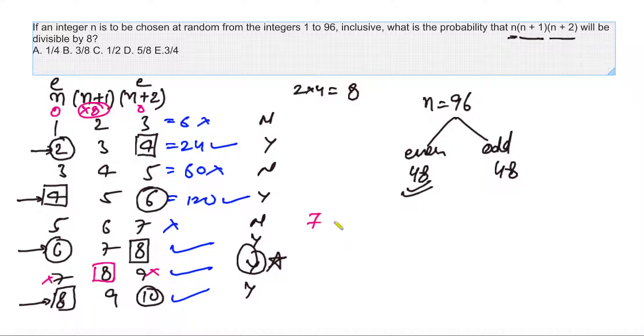So how many such cases can we have? One case is 7×8×9. The other case will be 15×16×17. The other will be 23×24×25. Another will be 31×32×33. That means every case in which the middle number is a multiple of 8. And how many multiples of 8 do we have from 1 to 96? That can be calculated by 96 divided by 8, so that is 12. That means out of these 48 odd cases, there will be 12 cases which will say yes to our question, and 36 will still say no.